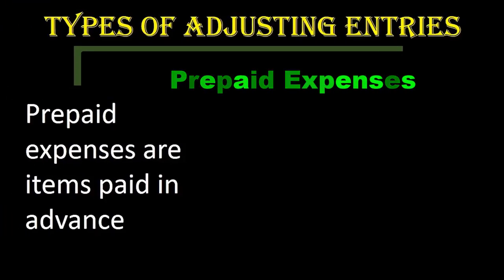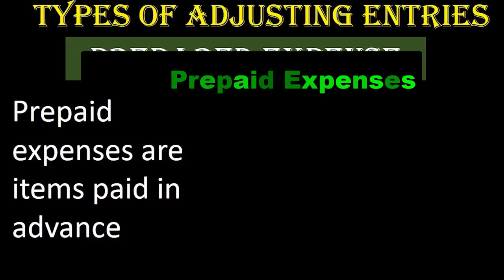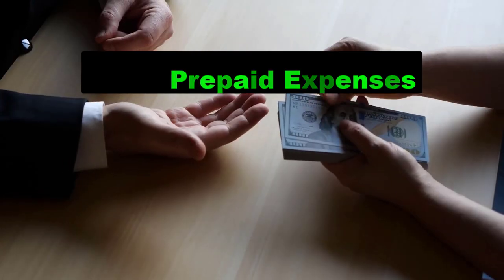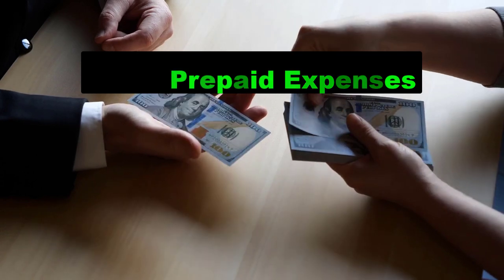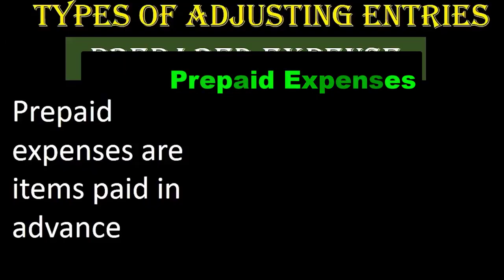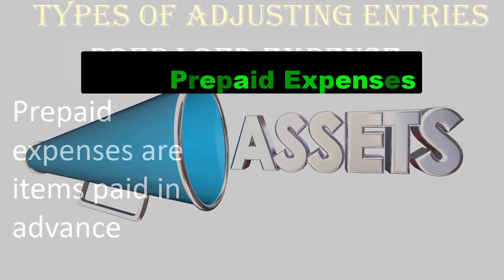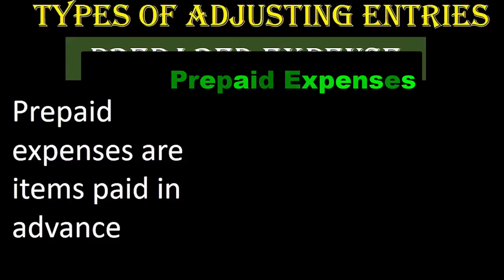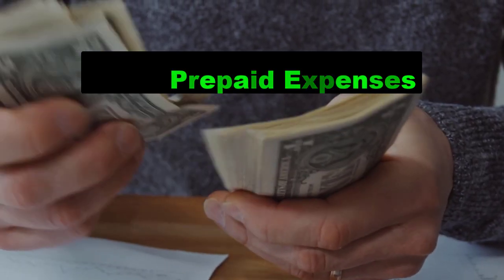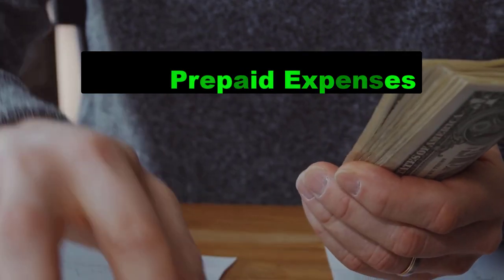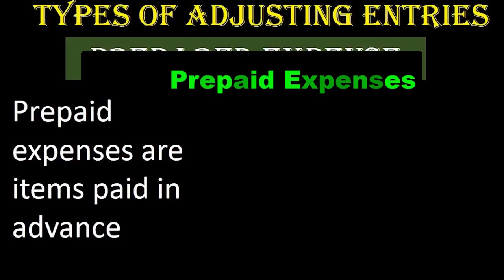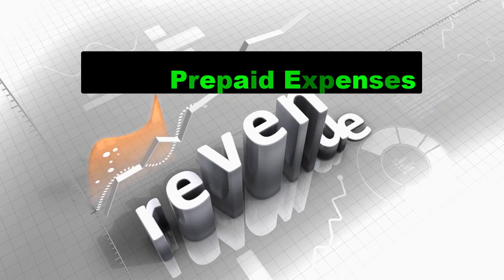The first type of adjusting entries is prepaid expenses. Prepaid expenses are items paid in advance. Although we have the word 'expenses' in prepaid expenses, prepaid expenses is actually an asset. The prepayment means we paid for something that will eventually be an expense. However, it's not an expense under the matching principle — the accrual principle of matching — until we have consumed it in order to help us generate revenue in the same time period.